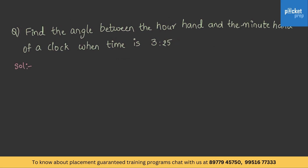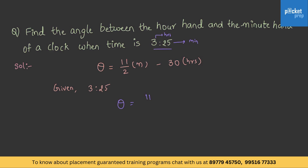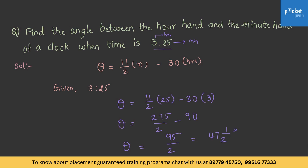Let us consider one basic question based on finding the angle between the minute hand and hour hand in a clock. We know that θ = (11/2) × M − 30 × H. Given time is 3:25, so θ = (11/2) × 25 − 30 × 3 = 275/2 − 90 = 95/2, which gives 47 and a half degrees. Therefore at 3:25, the angle is 47½ degrees.